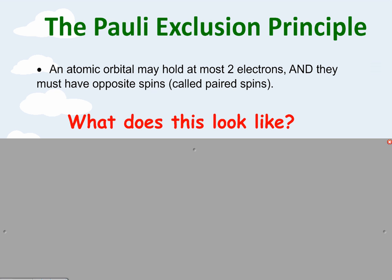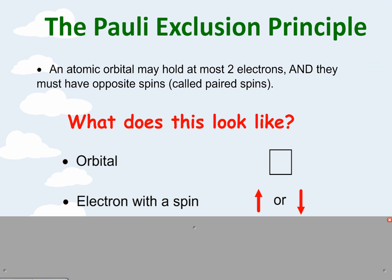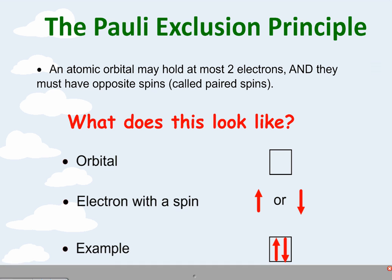The Pauli exclusion principle. It says that an atomic orbital may hold at most 2 electrons, just like my desks. And they must have opposite spins called paired spins. So what does this look like? An orbital will usually draw as a dash or a box. An electron will be represented by these arrows. And when they have opposite spins, you draw one up and one down. So here's your example of two electrons fitting in an orbital. And I'll show you these diagrams later.